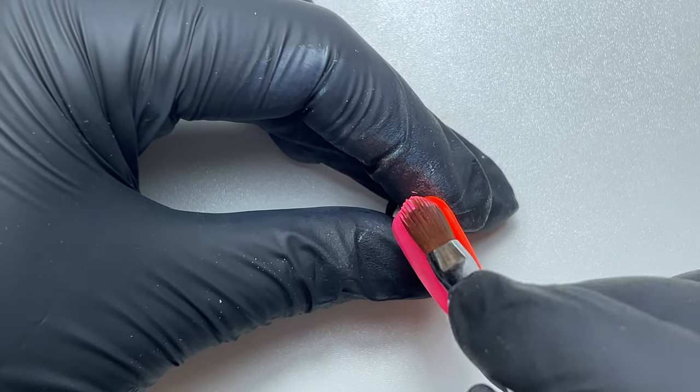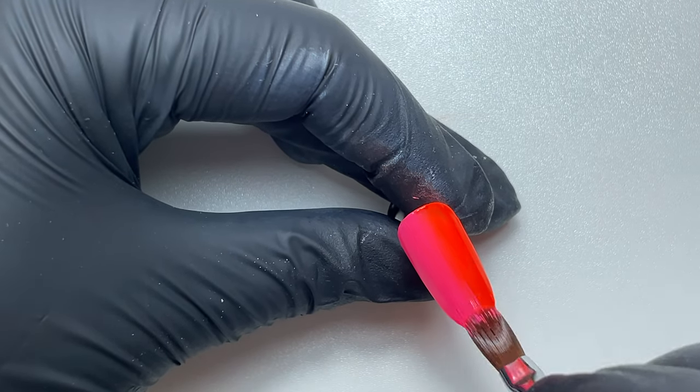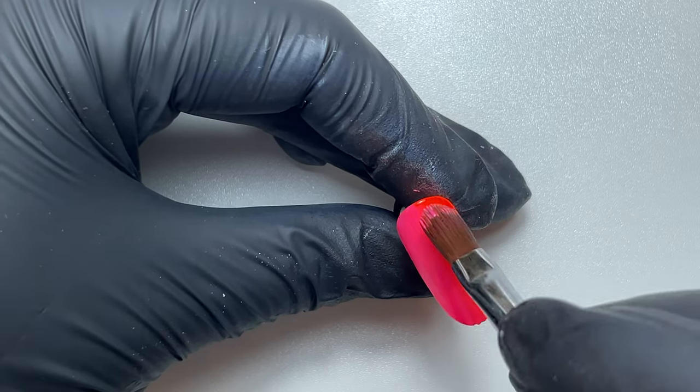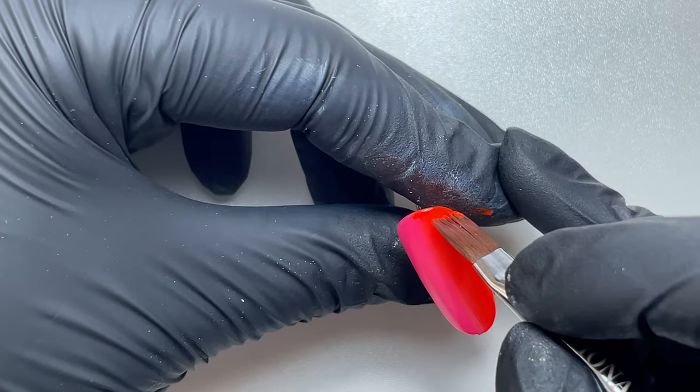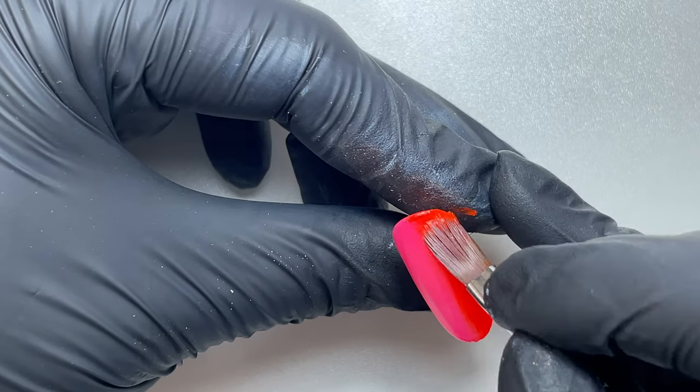And then I'm just going to swipe up and down the center of this nail to get the gradient. Once I've blended as much as I can, I'm going to pop that in the lamp to cure for 30 seconds. And then I'm doing exactly the same, applying red on one side and pink on the other.